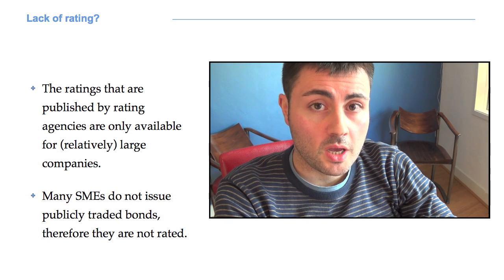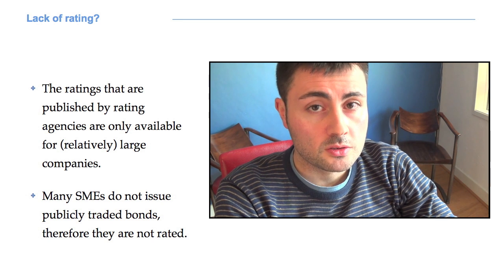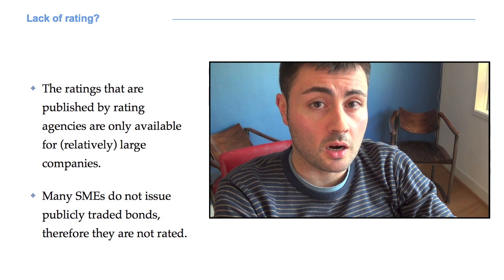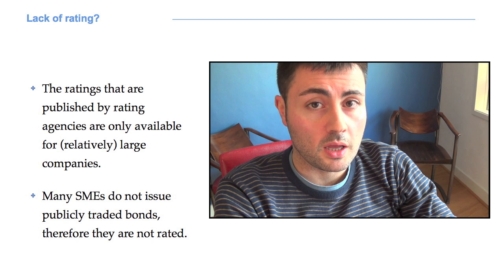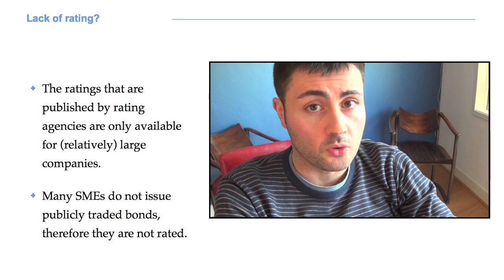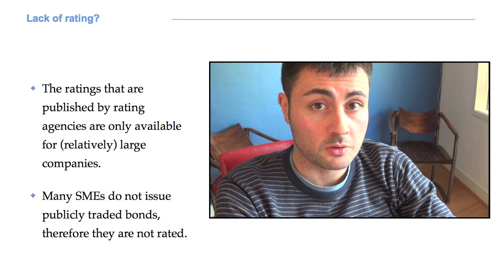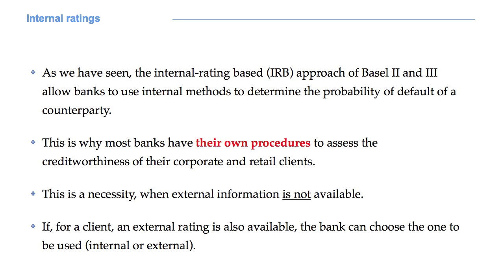Hi there. In the last class we have seen credit ratings. However, the ratings published by rating agencies are only available for large companies whose bonds are traded on the market. Many small and medium enterprises are therefore not rated. What happens in those cases? The solution is represented by internal ratings. The internal rating based approach of Basel 2 and 3 allows banks to use internal methods to determine the probability of default of a counterparty. Therefore, most banks have their own procedures to assess the creditworthiness of their corporate and retail clients, especially when external credit ratings are not available.